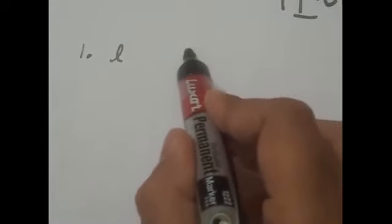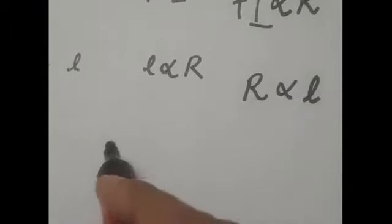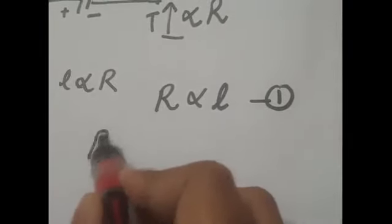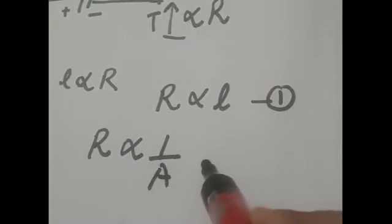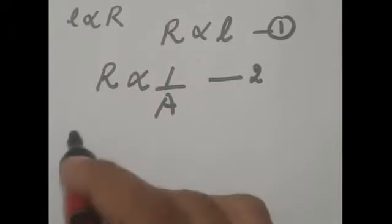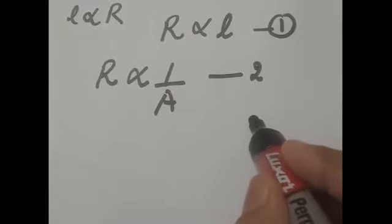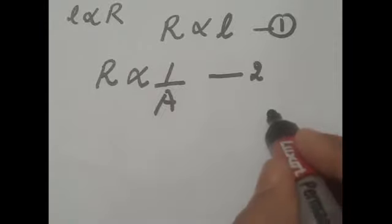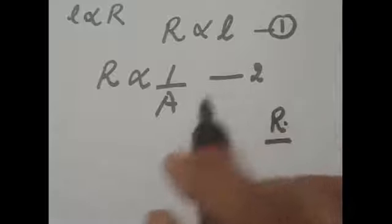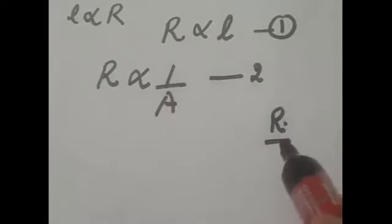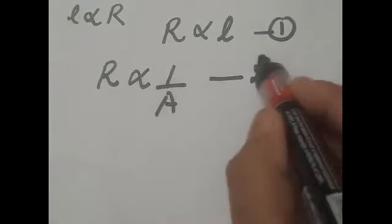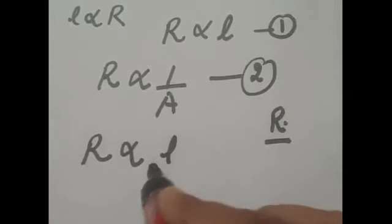Now let us summarize all four factors. The first factor is length: resistance is directly proportional to the length of the conductor. The second factor: resistance is inversely proportional to the cross-sectional area of the conductor. The third is that the resistivity of different materials is different. The fourth factor is temperature. Temperature and resistivity are both material dependent. When we combine the first and second equations, we get R is directly proportional to L divided by A.